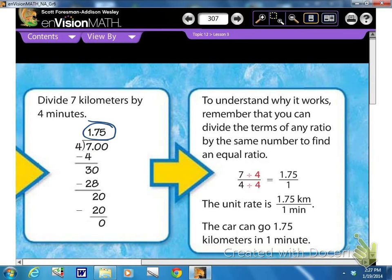So look over here to see what they did, or to understand why it works. Remember, you can divide the terms of any ratio by the same number to find an equal ratio. So what you did was you divided by 4 by 4 to get that 1, that 1 unit, which is the minutes. And then you had to divide the top number, of course, to find that equivalent or equal ratio. And 7 divided by 4 got you 1.75 kilometers. So you know now that the car can go 1.75 kilometers in 1 minute, or that is the unit rate.